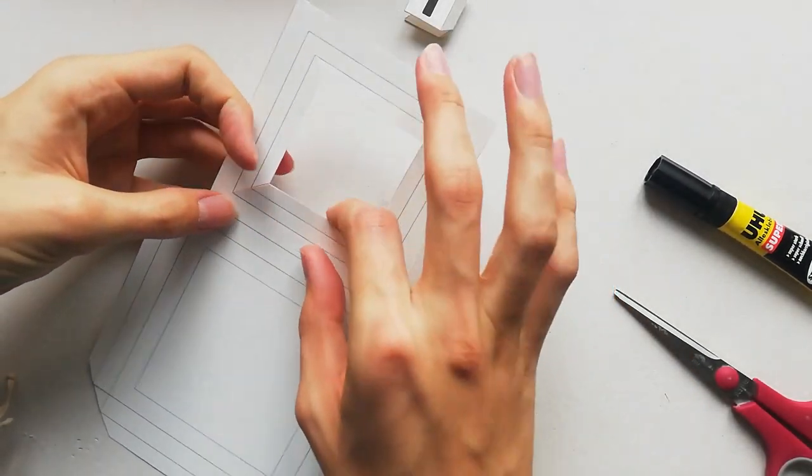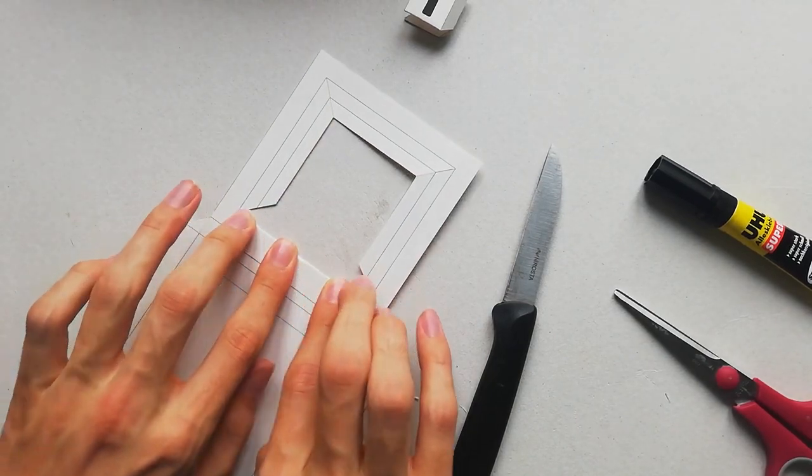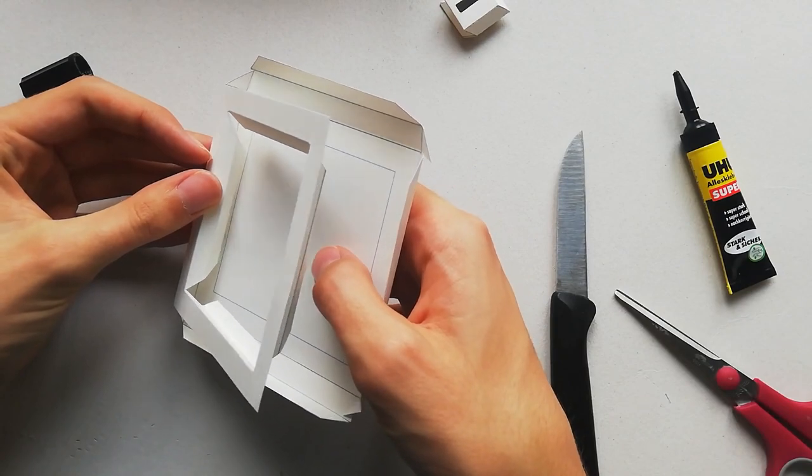After that we're going to glue these inner four edges on the blue line. For that just put some super glue on the blue line and press the edge on there as precisely as possible.